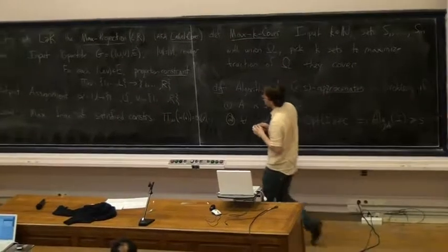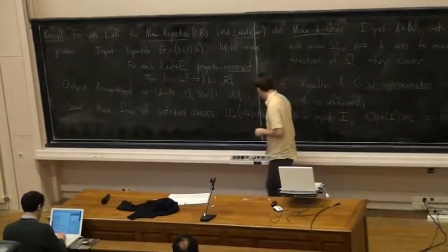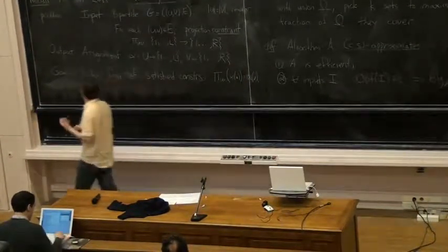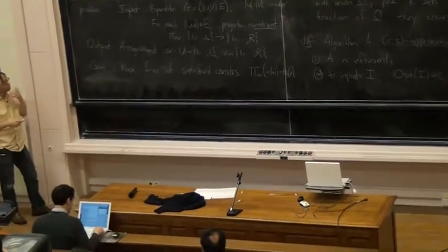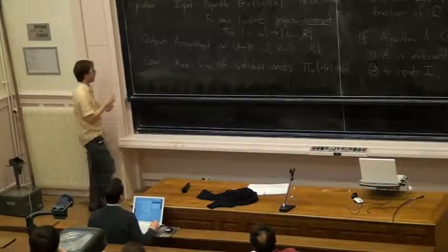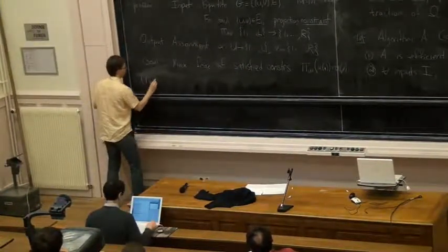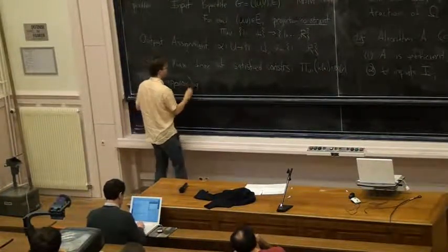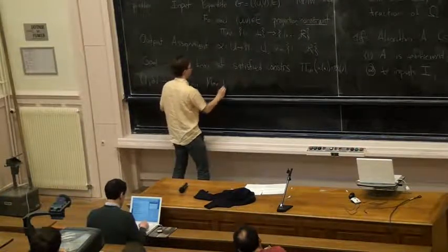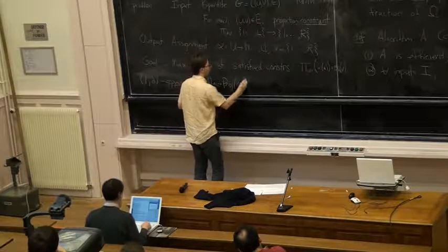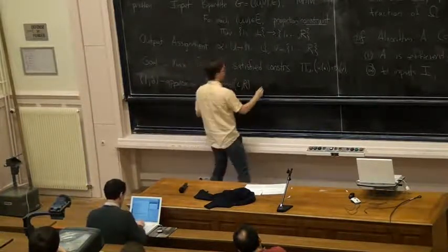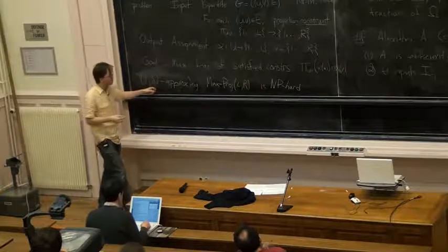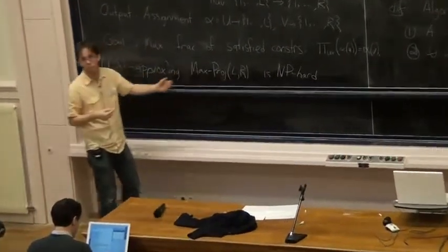This problem is extremely hard to approximate. The key theorem we'll use — essentially due to Raz — is that 1-comma-delta approximating Max Projection is NP-hard. More precisely, for all delta greater than zero, there exist constants L and R such that this problem is NP-hard.